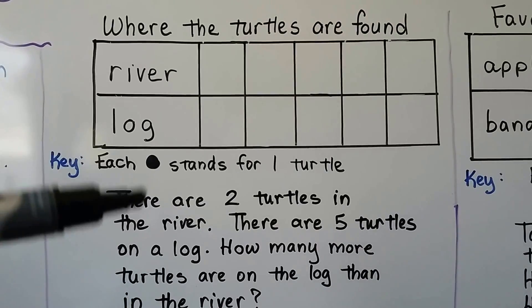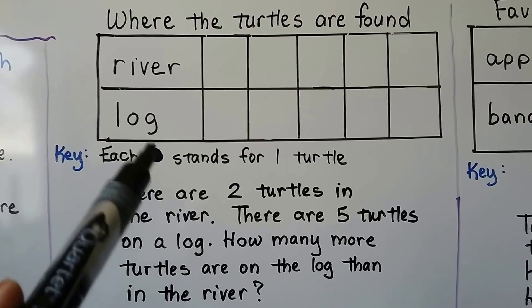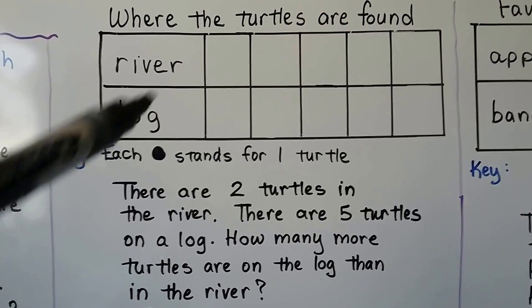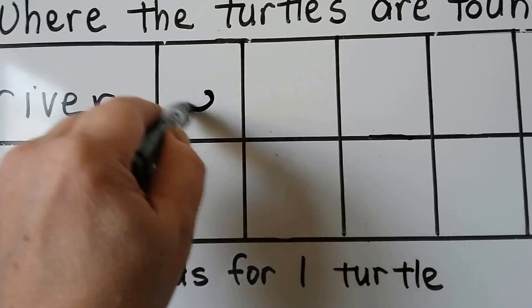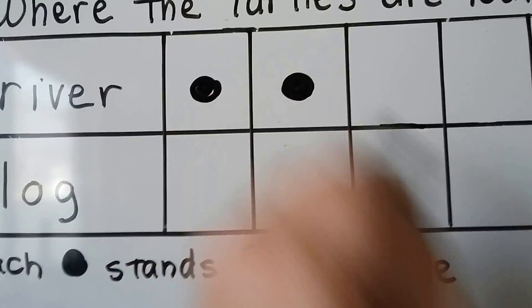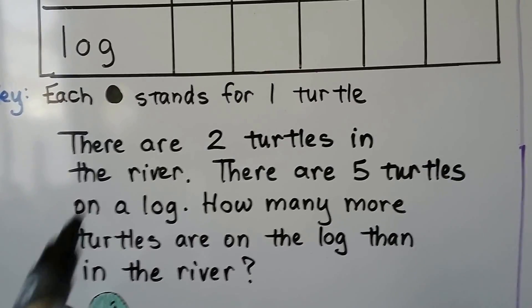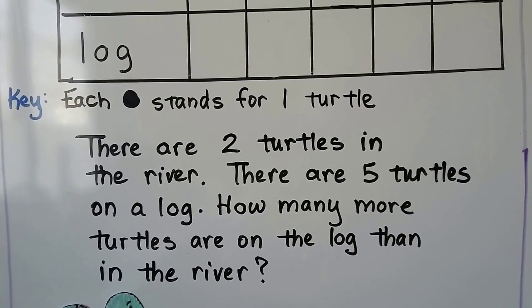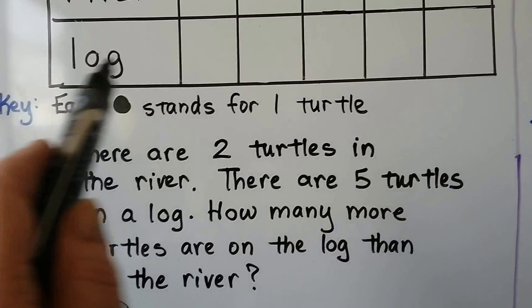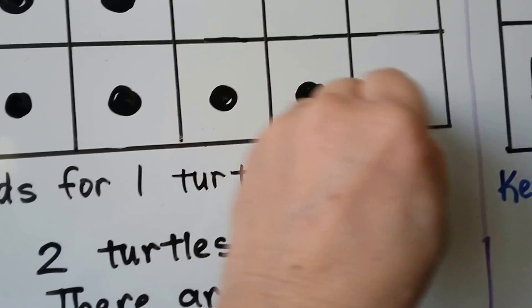So we fill in the picture graph with the information given. There are two turtles in the river — each black dot stands for one turtle — so we need two dots in the river row. One, two. It tells us there are five turtles on a log, so we need five black dots for the row for the log. One, two, three, four, five.